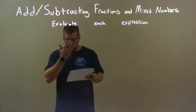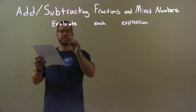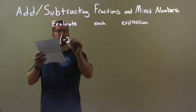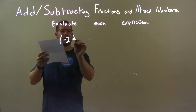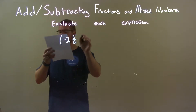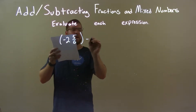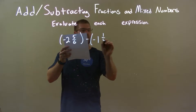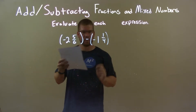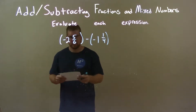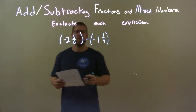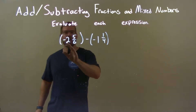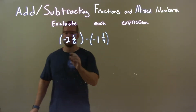So, if I was given these numbers — negative 2 and 5/6, minus a negative 1 and 1/4 — what I'm going to do here is break this down to be a whole number and a fraction.